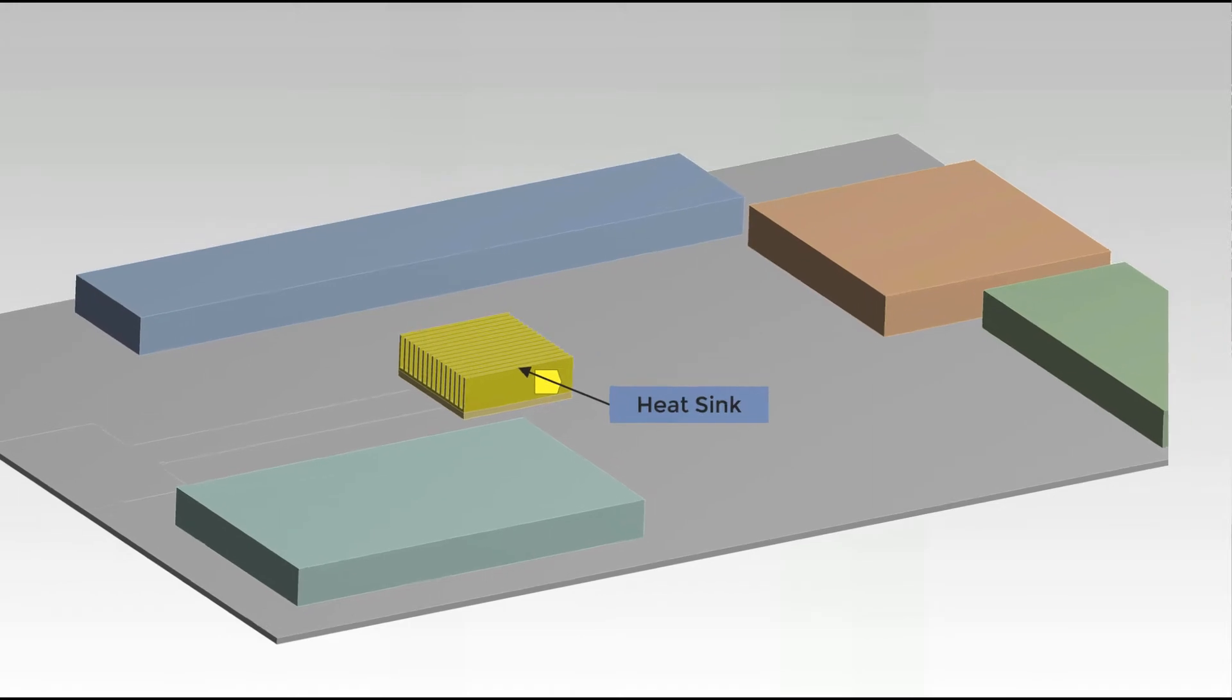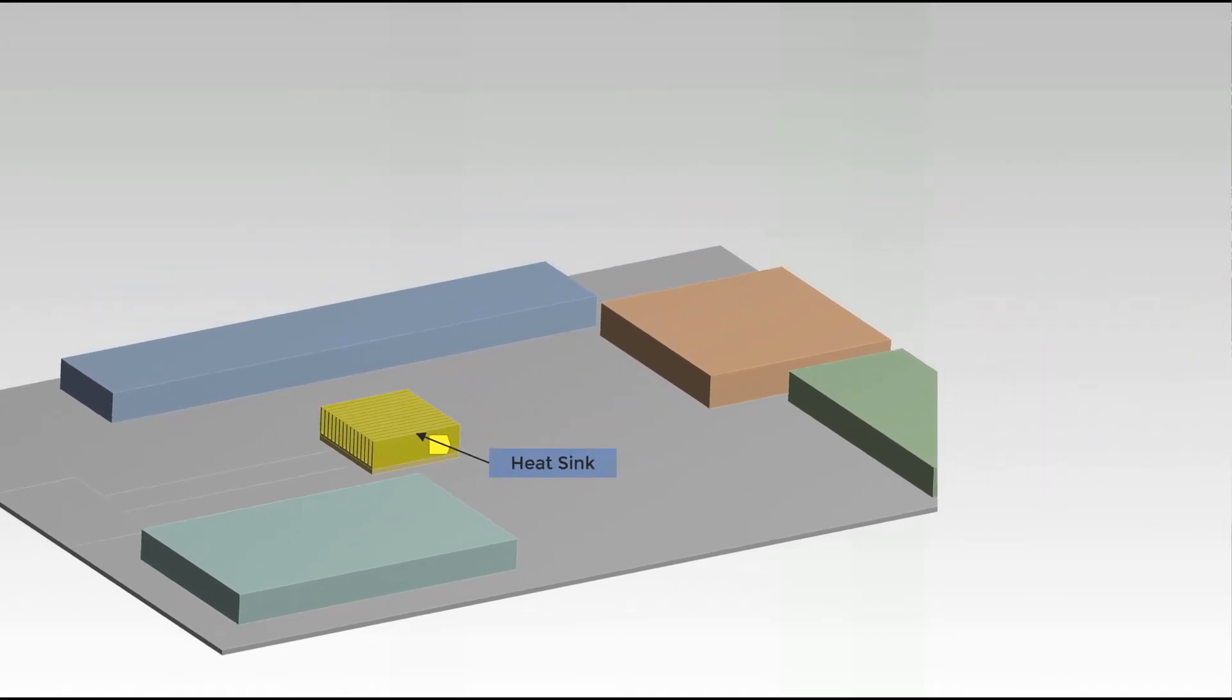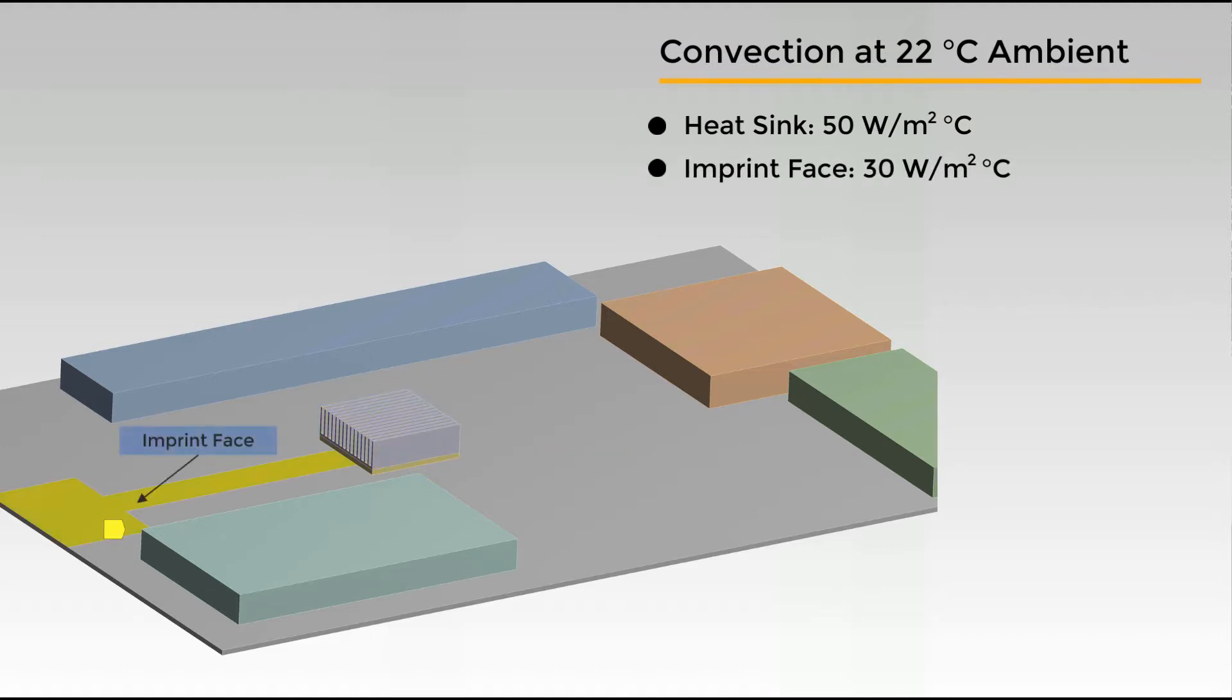Our focus is on convection for dissipating excessive heat from the system, and hence we'll use convection boundary condition on three different regions. The ambient temperature is set to 22 degrees Celsius. As the heat sink is the main device to absorb and dissipate heat, we'll consider it to be in the direct path of the cooling fan. For all the faces of the heat sink, except the bottom face which is connected to the processor, we'll apply a higher film coefficient of 50 watts per meter square per degree Celsius.